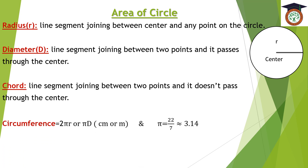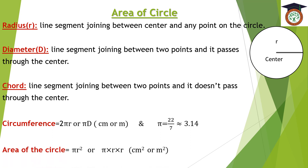We should remember that the circumference of the circle equals 2πR or πD. Its measuring unit is the centimeter or the meter. We should know well that π equals 22 over 7 or approximately equals 3.14.